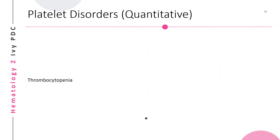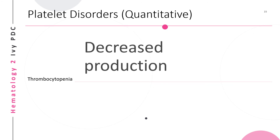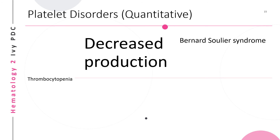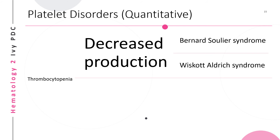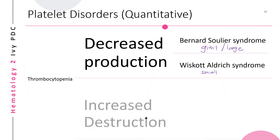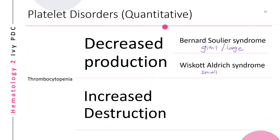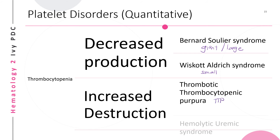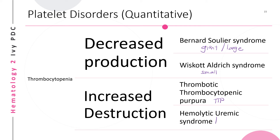A decreased platelet count, or thrombocytopenia, may be due to decreased production of platelets — examples include Bernard-Soulier syndrome, where platelets are giant or large, and Wiskott-Aldrich syndrome, where platelets tend to be small. Thrombocytopenia may also be due to increased destruction of platelets, examples being thrombotic thrombocytopenic purpura (TTP) and hemolytic uremic syndrome (HUS).